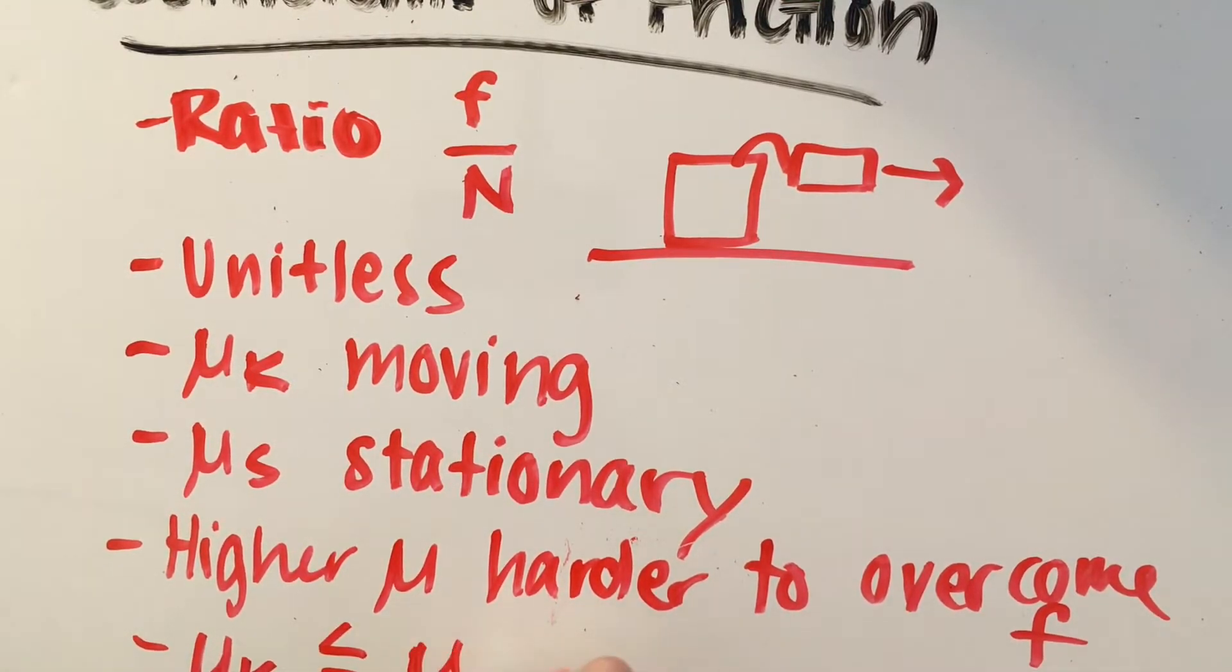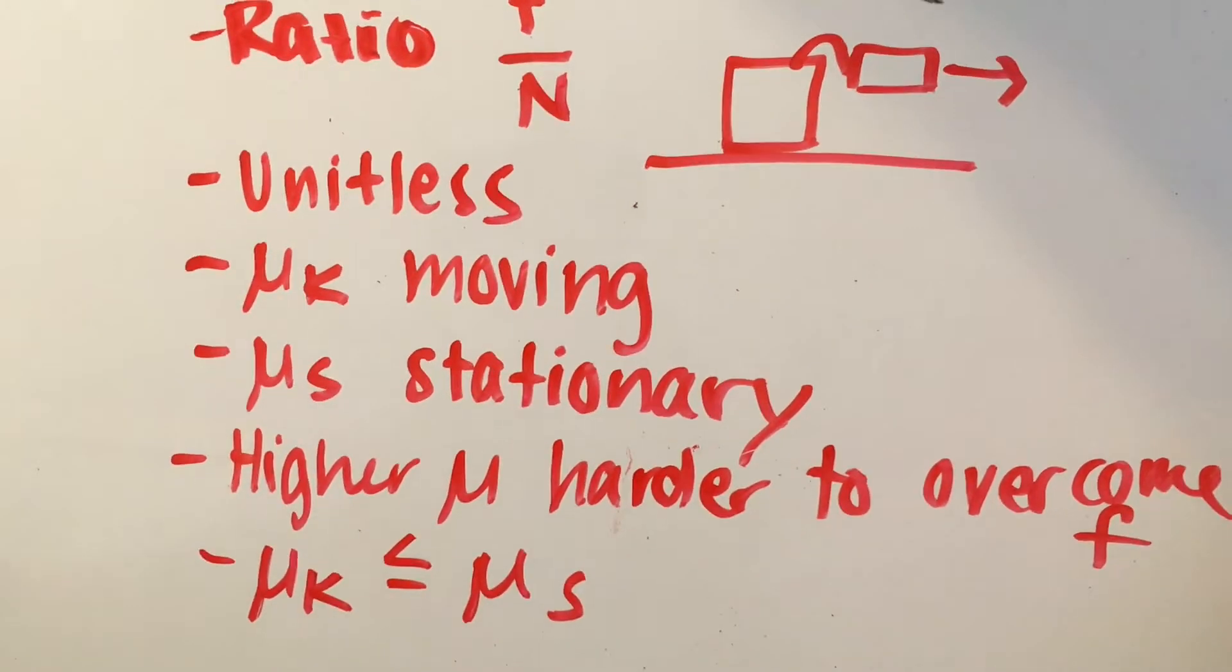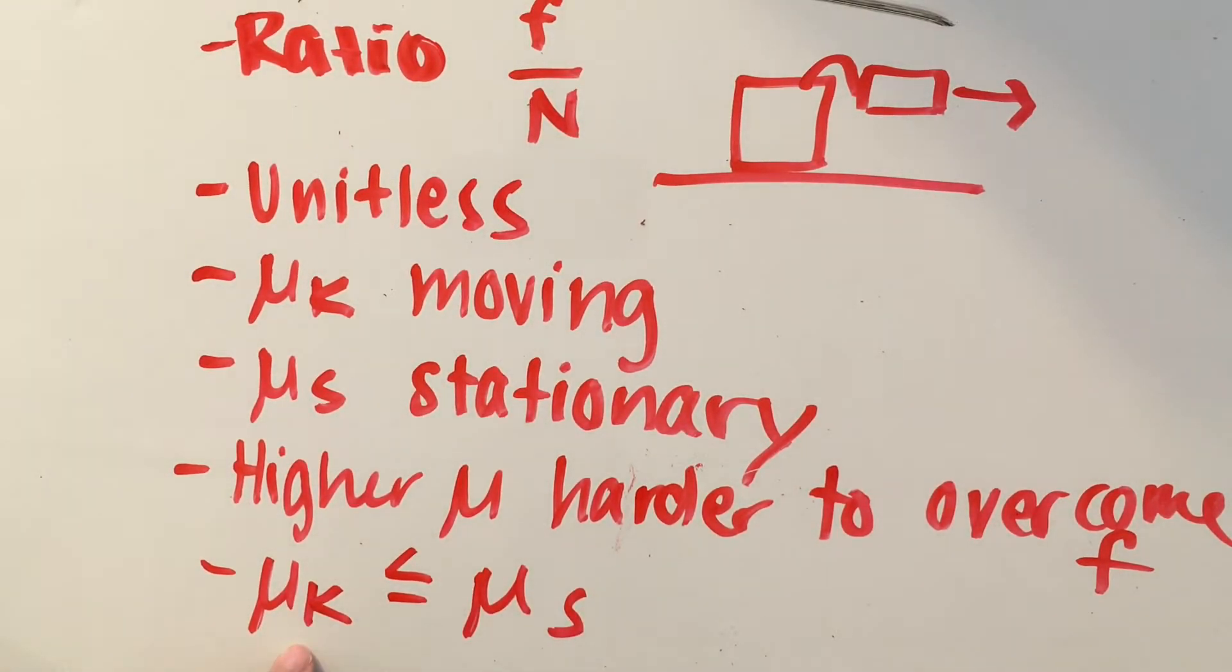So when we say that the coefficient of kinetic friction is less than or equal to the coefficient of static friction, then that's telling us that it's easier to get an object to overcome its frictional forces when it's already moving, compared to when the object is just stationary.